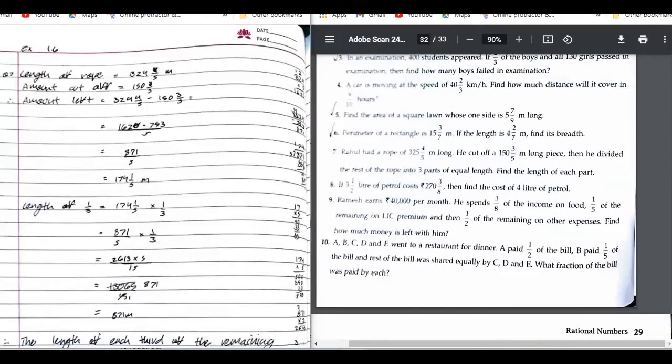Can you read question number 7 for me? Yes. Rahul had a rope of 324.5 meters long. He cut off 153.5 meters long piece and then divided the rest of the rope into three parts of equal length. Find the length of each part.